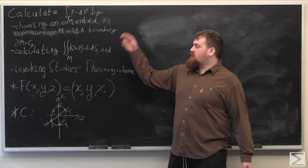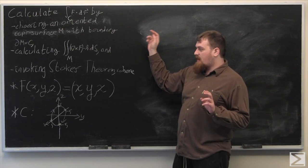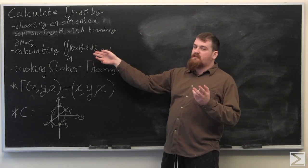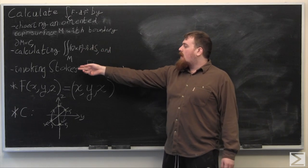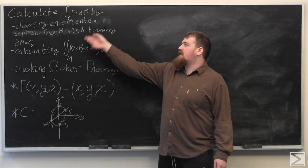And we're going to do this by choosing an oriented closed compact piecewise regular surface with boundary m, whose boundary m is the same as c, then we're going to calculate the flux of the curl of f through m, and then we're going to use Stokes' theorem to say that this quantity is the same as this quantity.